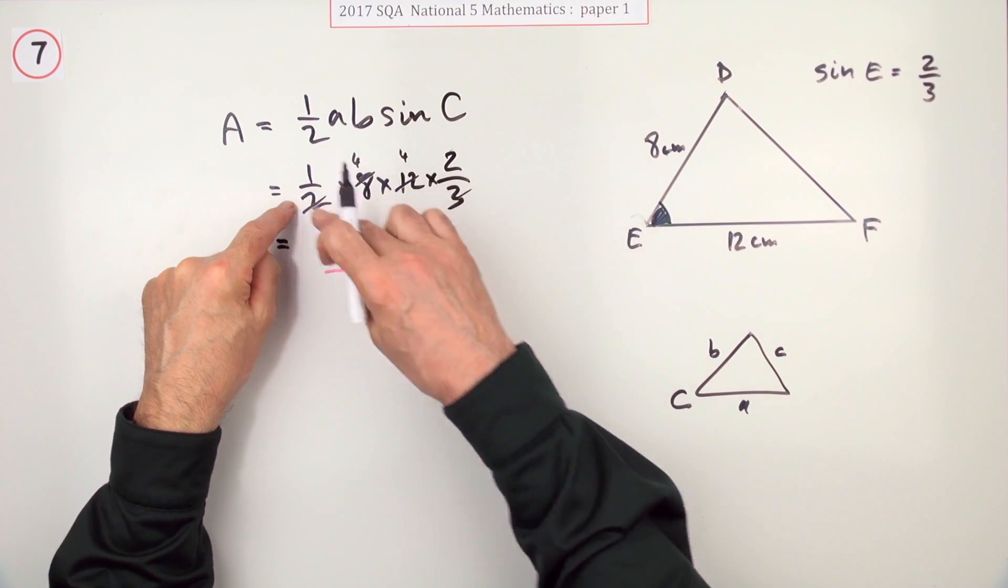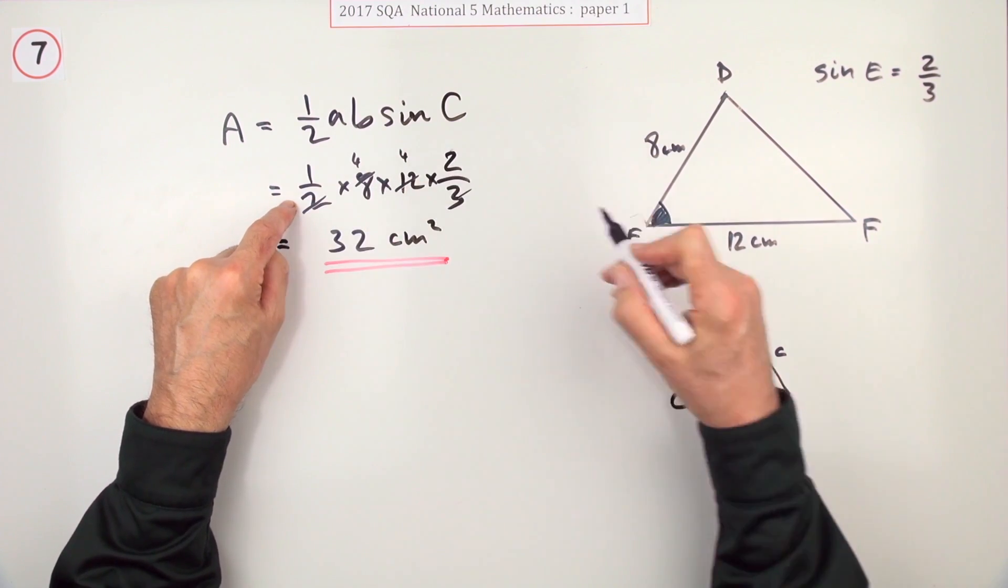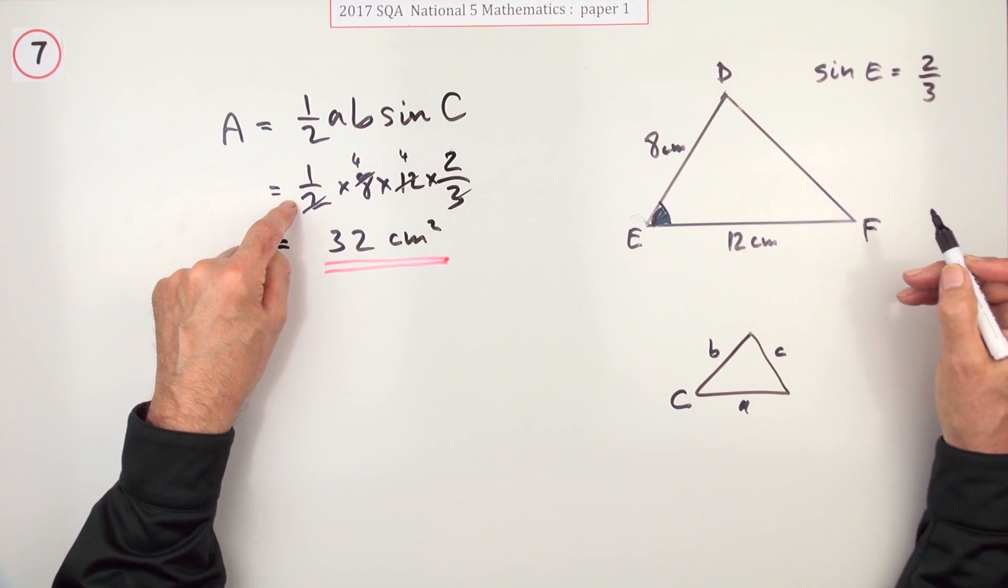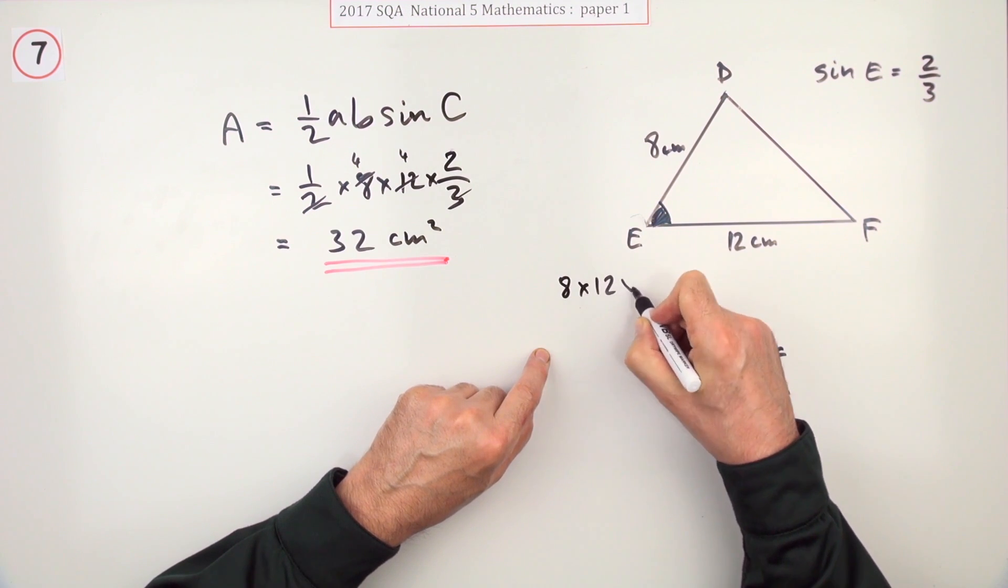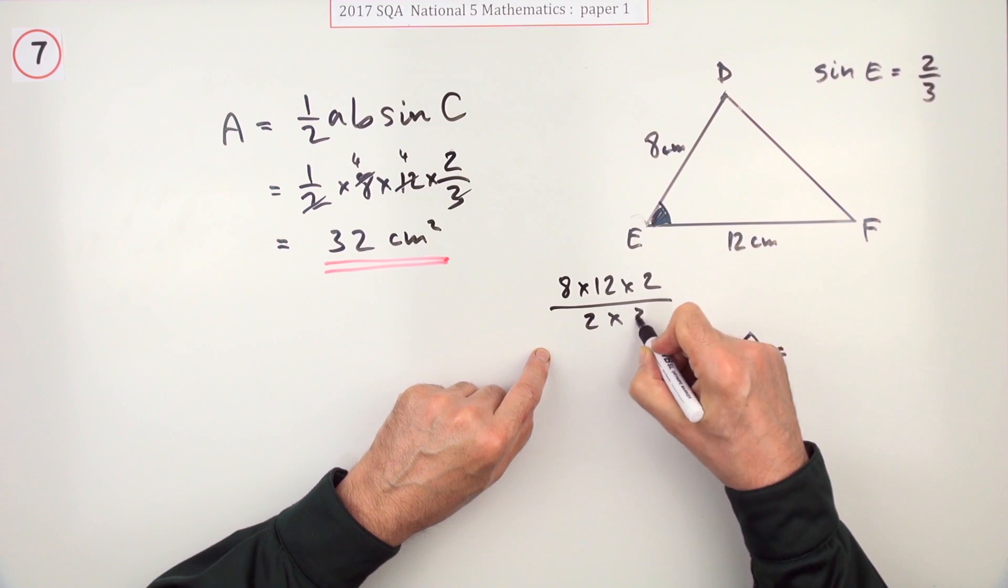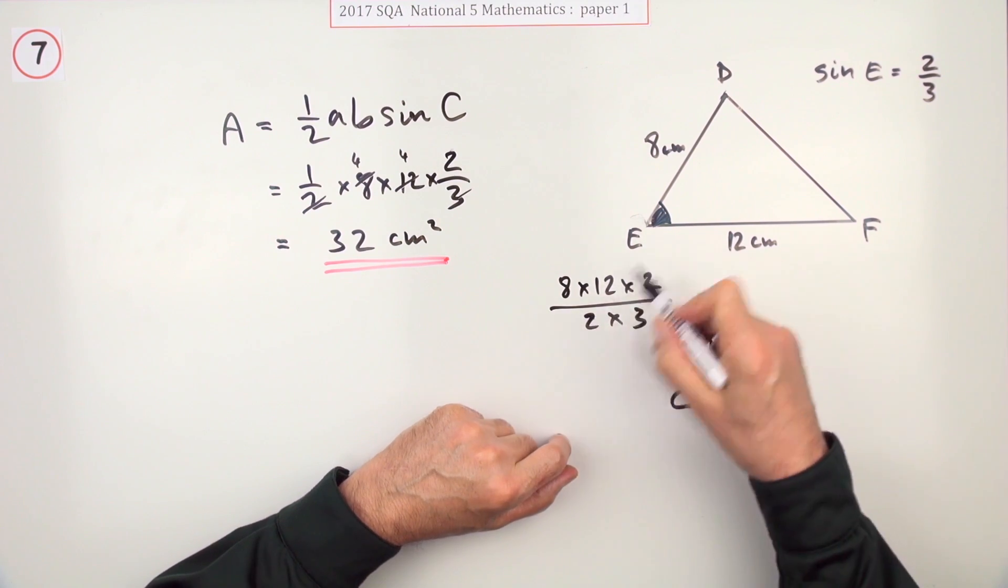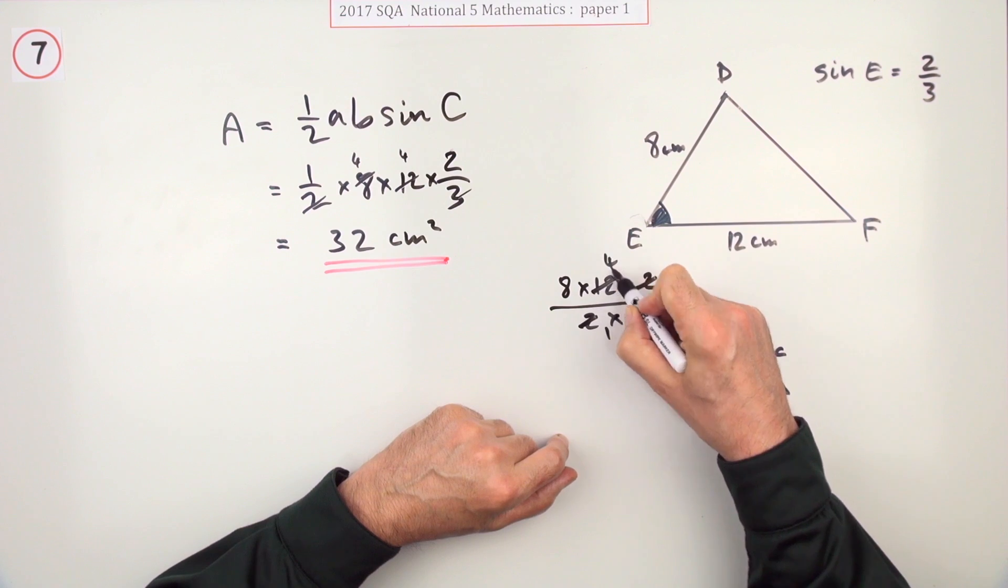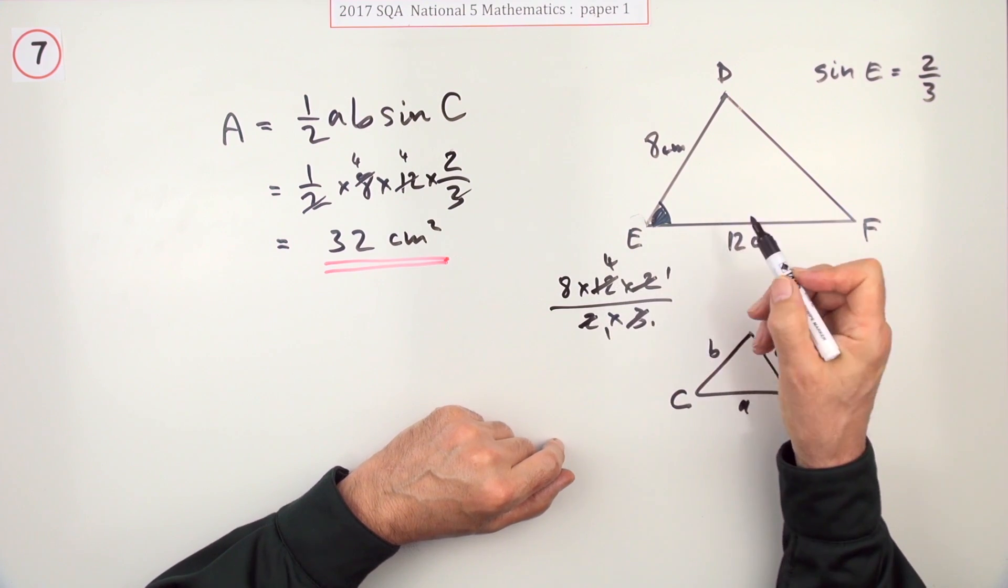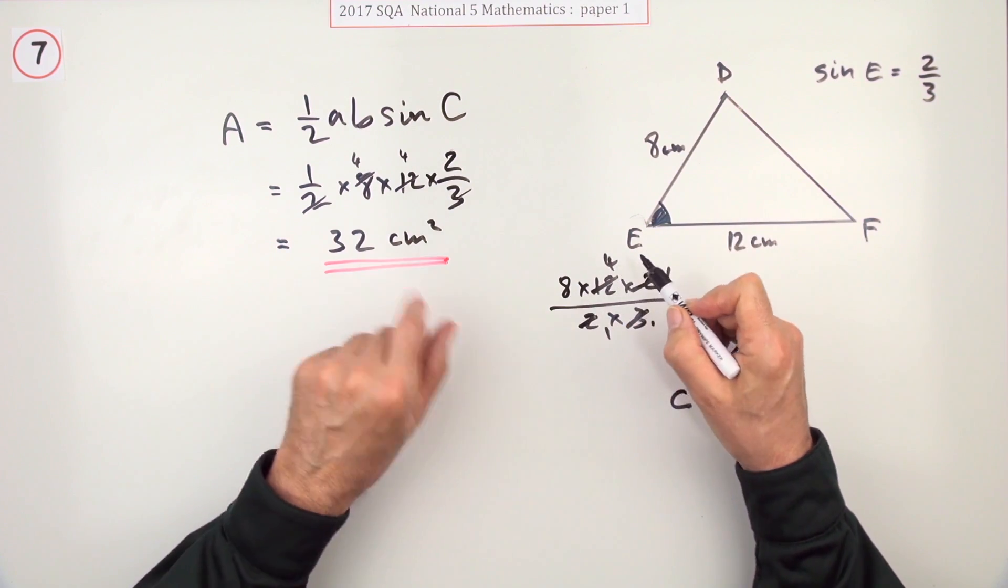And of course if you didn't want to spoil your numbers with the scoring outs, you could always have worked it out at the side somewhere. There was an 8 times a 12 times a 2 on top and a 2 times a 3 underneath. And in your working, you could have obliterated these numbers. In this case, where I've done it, I've got 8 times 4 again is 32.